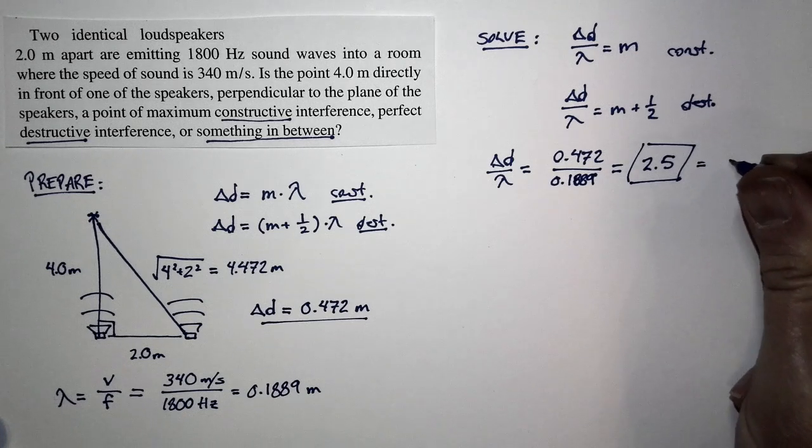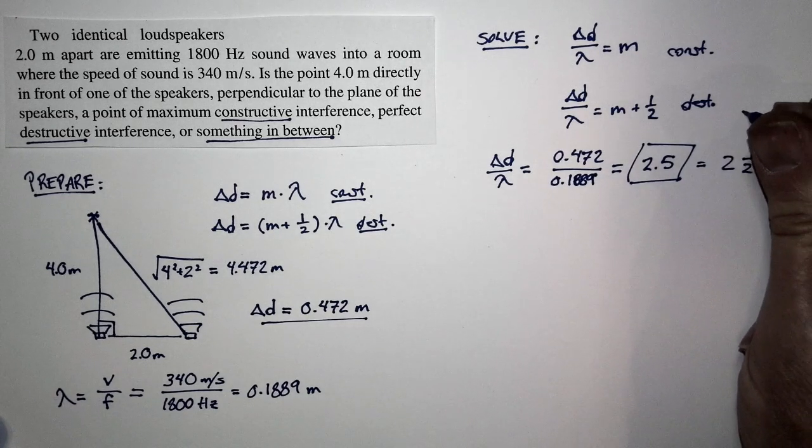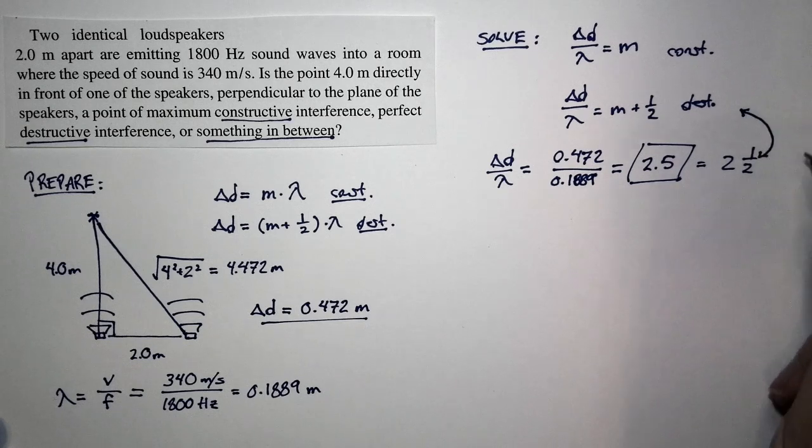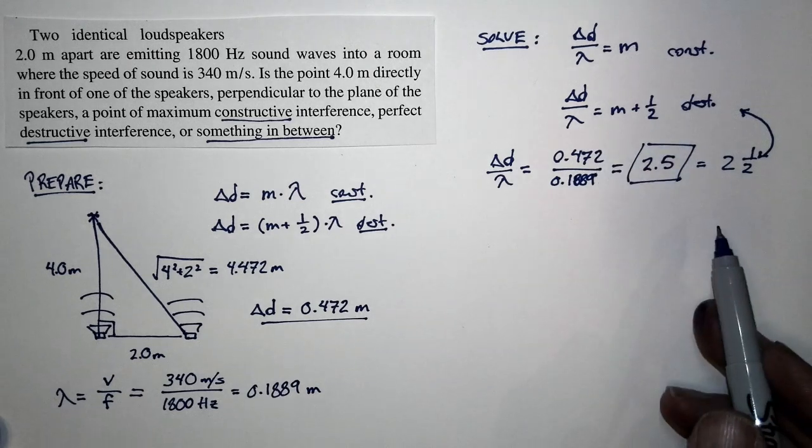Well, 2.5, that's two and a half. Two and a half clearly corresponds to this case right here. It's an integer, two, plus a half. And so I have exact destructive interference.